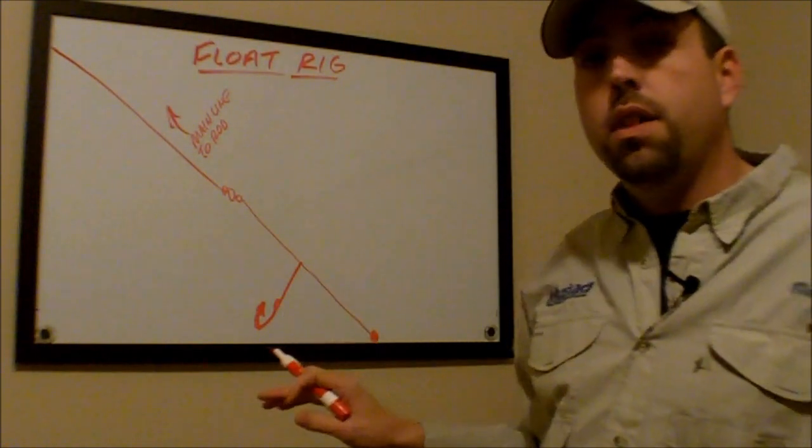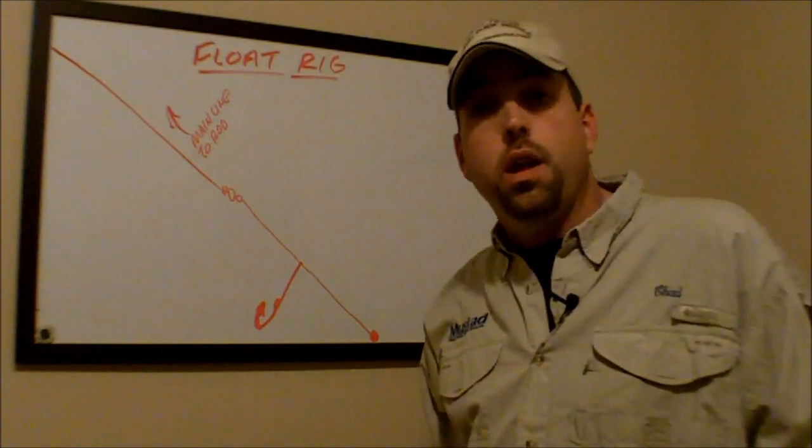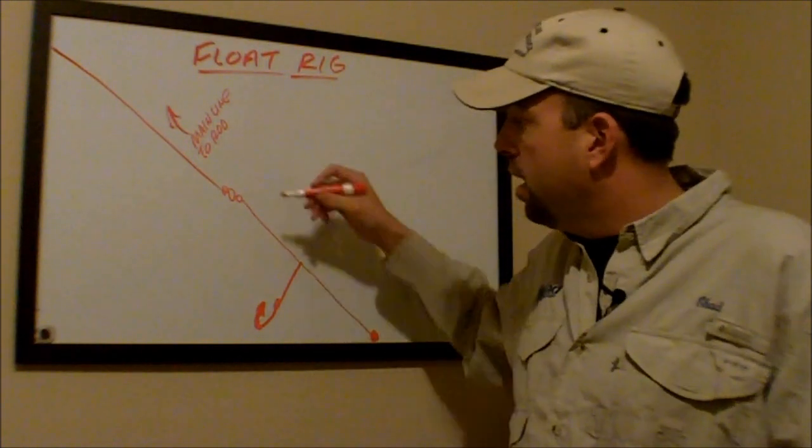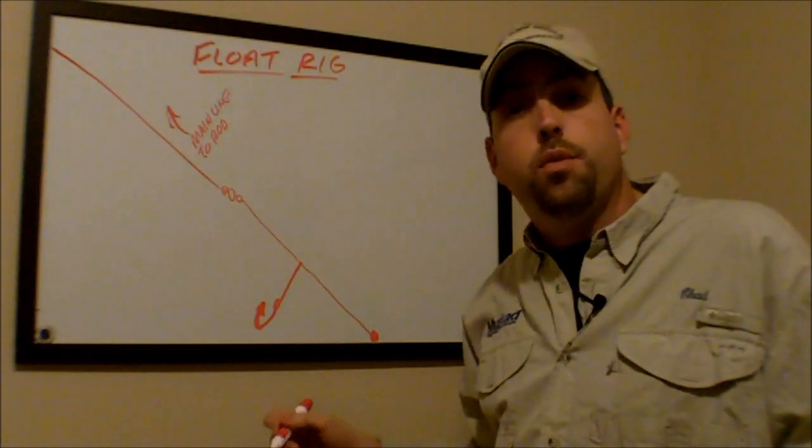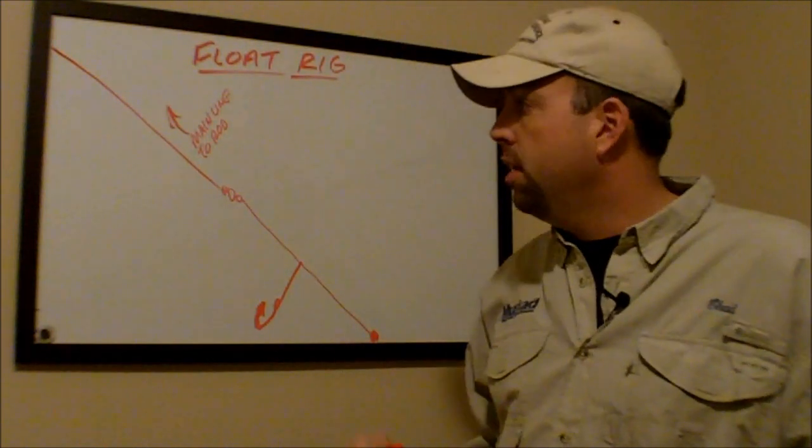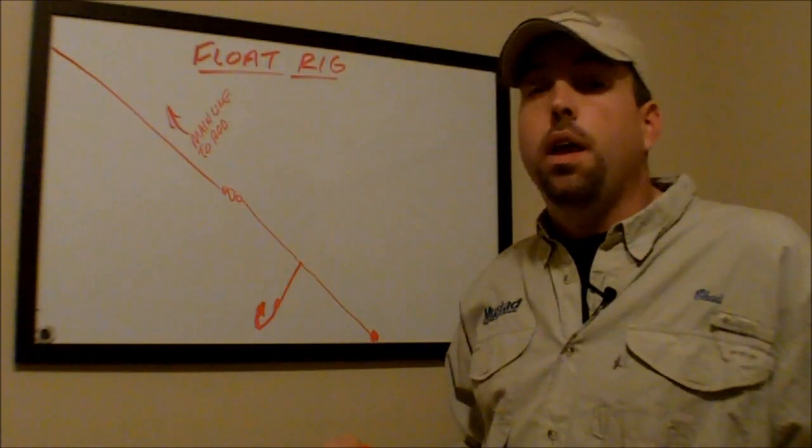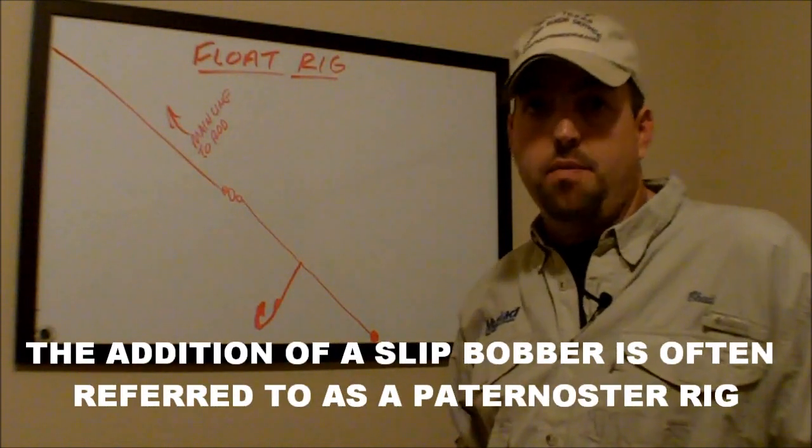Now, the difference between a three-way rig or a modified three-way rig and a float rig is that a float rig has a bobber or a float added to this rig. I've seen this done two different ways. I've seen this done with a slip bobber, and then I've seen it done with peg floats like you use on a Santee rig for catfish.